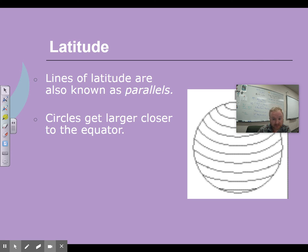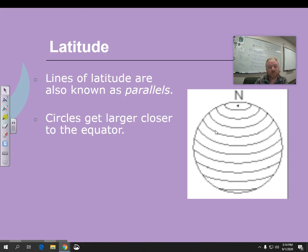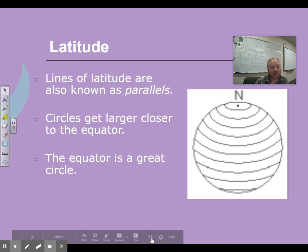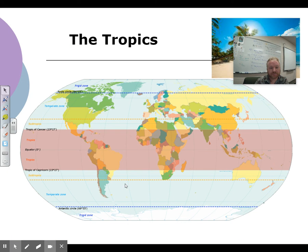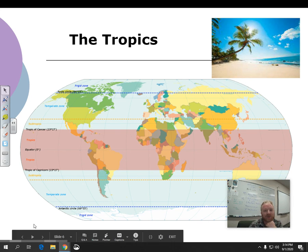The equator is the biggest circle, and then it gets smaller as you go up. So the Arctic Circle up here and the Antarctic Circle are the smallest circles of latitude. The equator is the great circle.